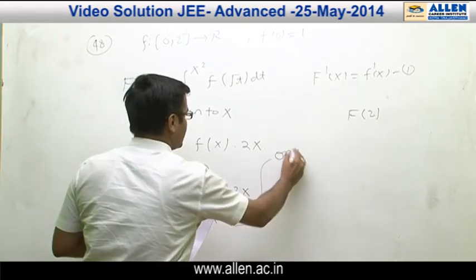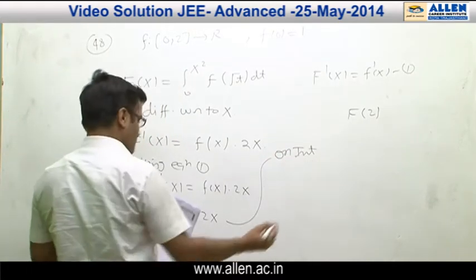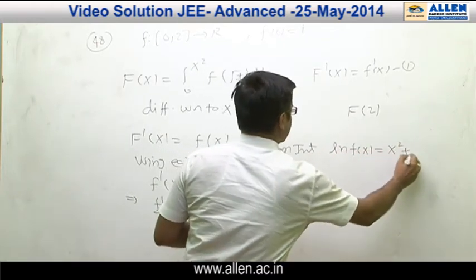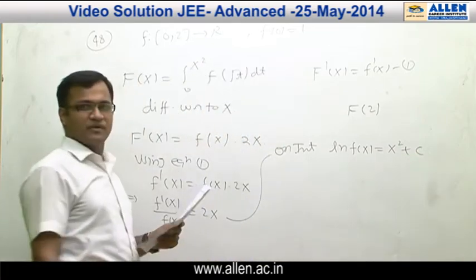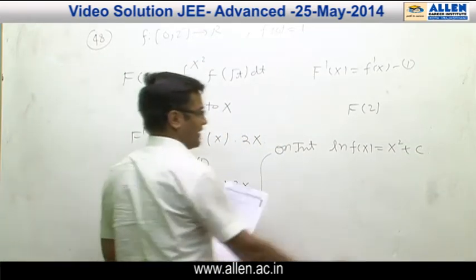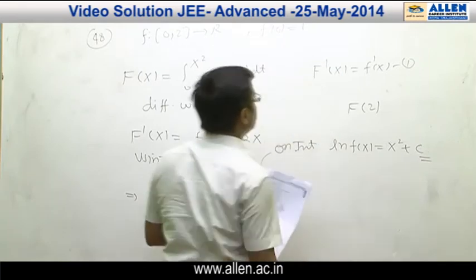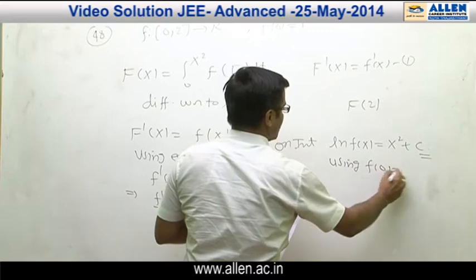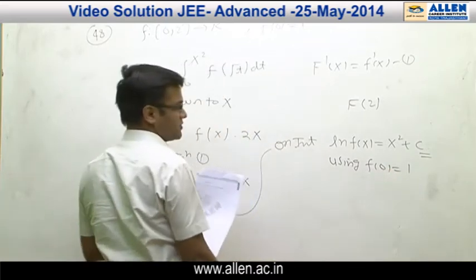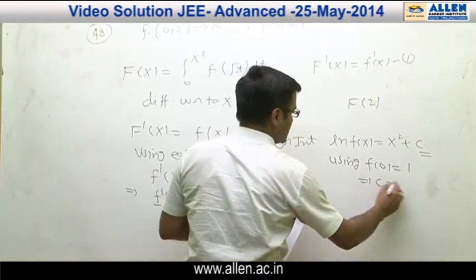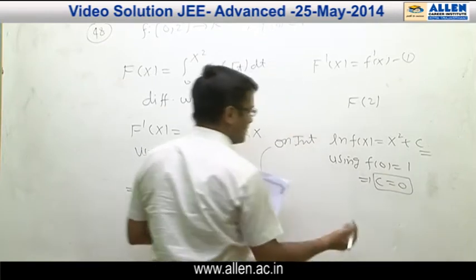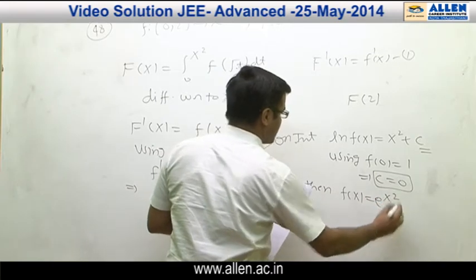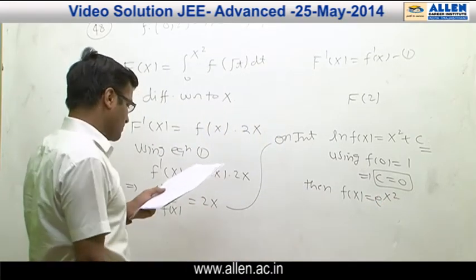On integrating, we get ln f(x) = x² + c. Now we find the constant c using the condition f(0) = 1. When x = 0, f(x) = 1, which implies c = 0. Therefore f(x) = e^(x²).